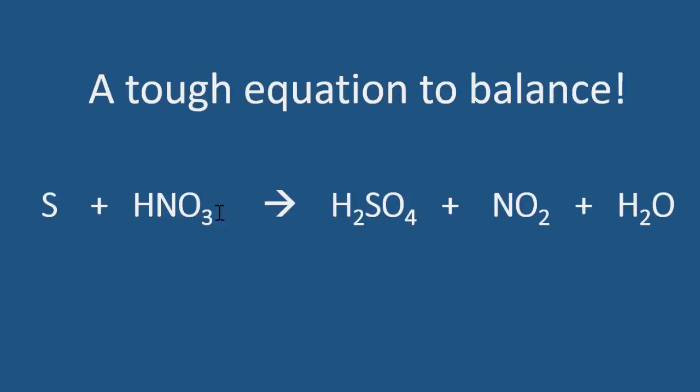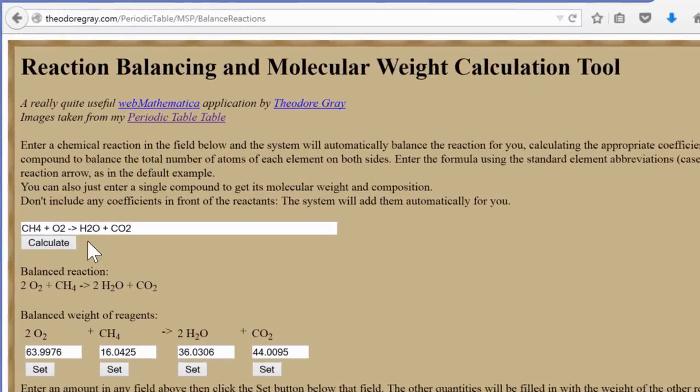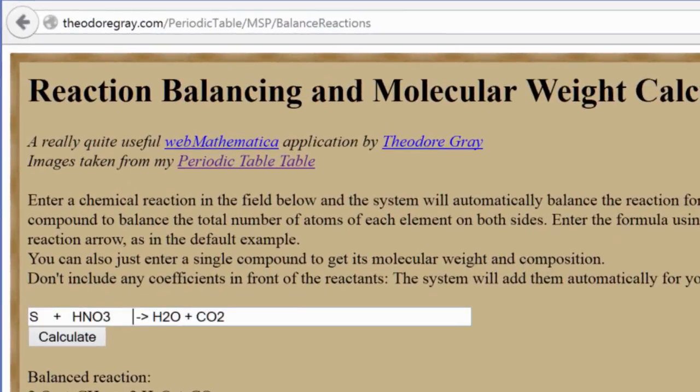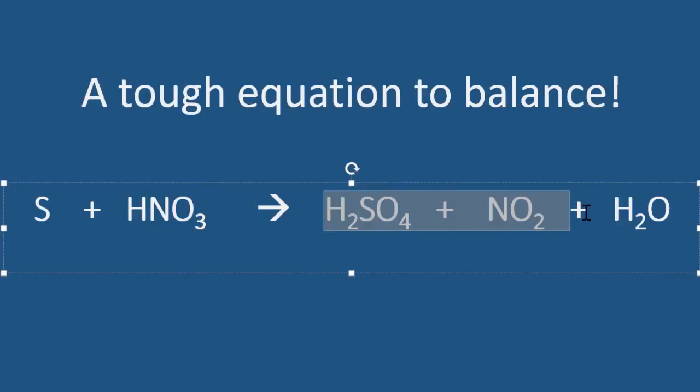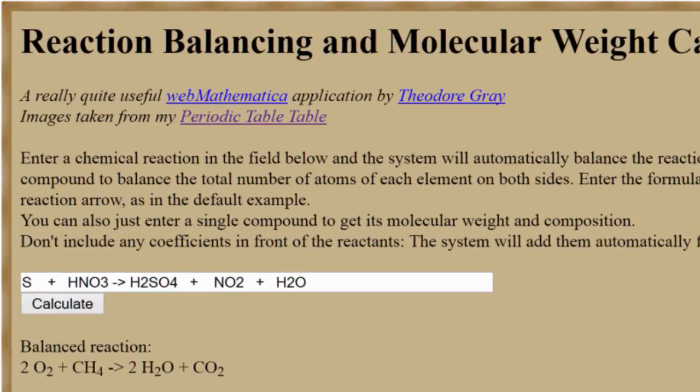What I'll do is copy the reactants and put those into the online calculator right here. And then I'll go to the products, copy those. Notice that I left the original yield sign in the equation. That's important.